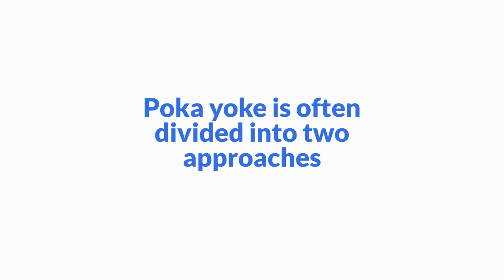Poka-yoke is often divided into two approaches: the warning approach and the control approach. The warning approach signals operators when a defect occurs so that operators take corrective action, and the control approach stops the process entirely when a defect occurs, such that corrective action must be taken before the process proceeds.